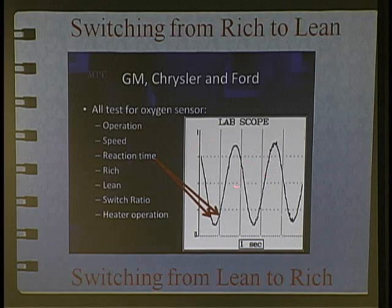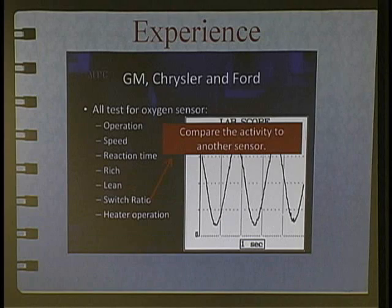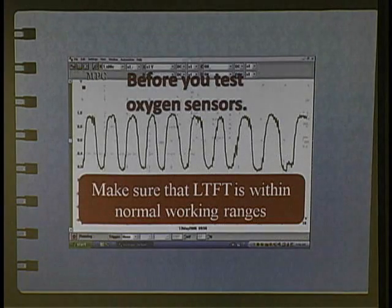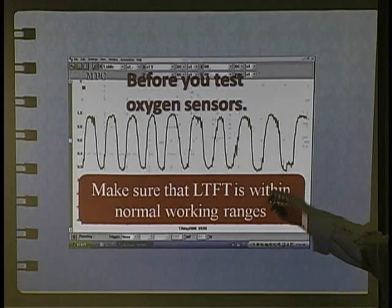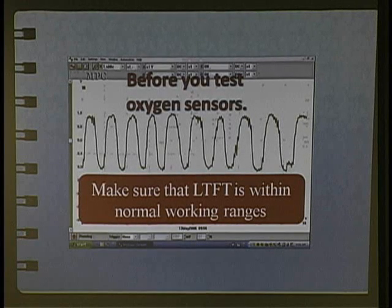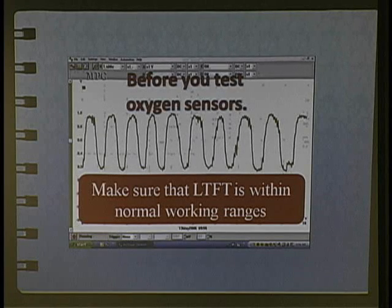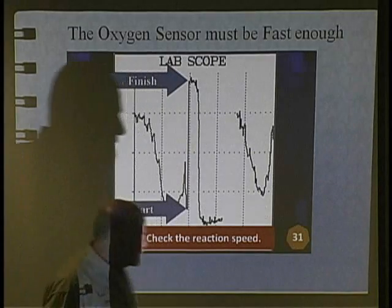This is a brand new car with a brand new oxygen sensor. Does it go rich enough? Does it go lean enough? Switch ratio is — you're going to compare it to another sensor. Heater operation is timed activity. Just make sure that your fuel trim is within somewhat normal working ranges before you go testing the oxygen sensor. You don't want the oxygen sensor to be shifted rich, bias rich, shifted lean, bias lean. You really want long-term fuel trims to be somewhat normal to test an oxygen sensor.